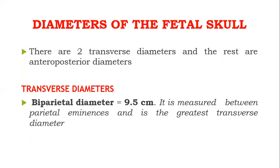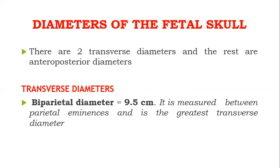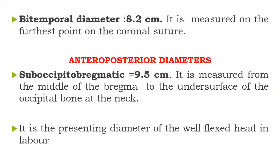On the diameters aspect, the fetal skull has two transverse diameters and the rest are anteroposterior diameters, running from front to back. The first transverse diameter is the biparietal diameter, which measures 9.5 centimeters, measured between the parietal eminences — this is the greatest transverse diameter. The second transverse diameter is the bitemporal diameter, which measures 8.2 centimeters, measured at the widest point on the coronal suture on either side of the fetal skull.